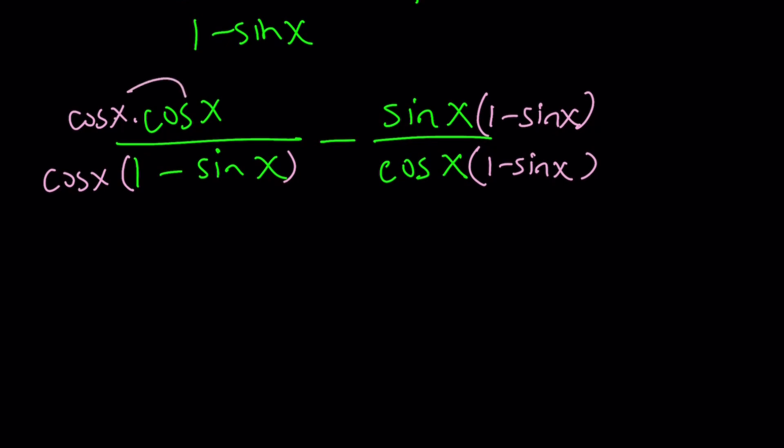Cosine x times cosine x is cosine squared x minus. Now we can go ahead and distribute this. Sine x times 1 minus sine x, and then minus sine x times minus sine x. That's a minus times minus or negative times negative. That is going to become a positive sine squared x, because sine x times sine x is sine squared. Make sense?